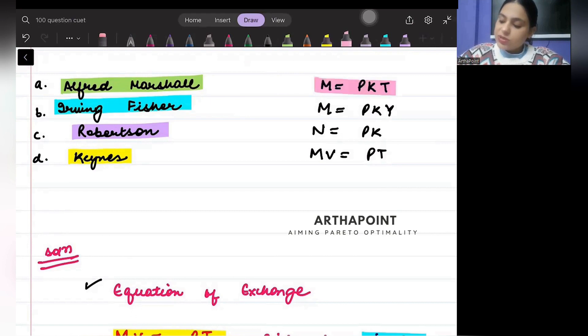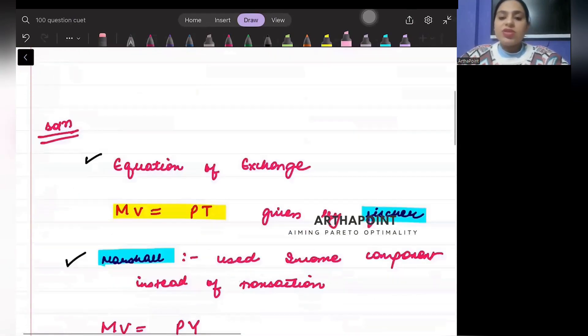Along with that we are given four options here: M = PKT, PKY, N = PK, and MV = PT.